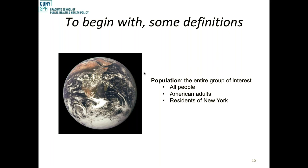Some main definitions: the idea of population and sample. When we're talking about a population, we're talking about the entire group of interest. A population could be all of the people on earth, all people in the United States, or it could be something as specific as all students at Hunter between 18 and 27 years old who are female and have taken more than one course. You define what your population is. Most of the time, our population is too large for us to measure everybody.